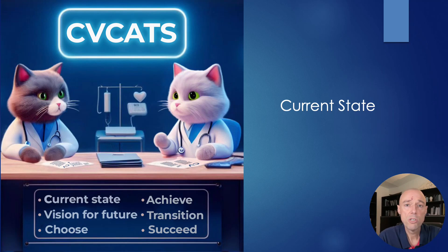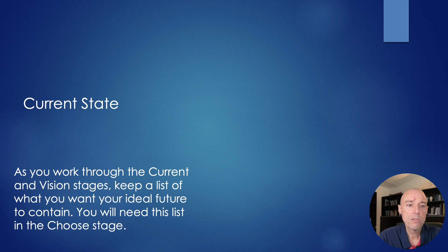Let's get started. How do you create your successful and meaningful career? I've outlined in the previous presentation that I'm going to talk you through the CVCATS framework. First of all, we're going to start with the current state — that's about what's going on for you at the moment. As you work through all of the exercises in the current state and in the vision stage, make sure that you start keeping a list of things that you want to have in your ideal future career.